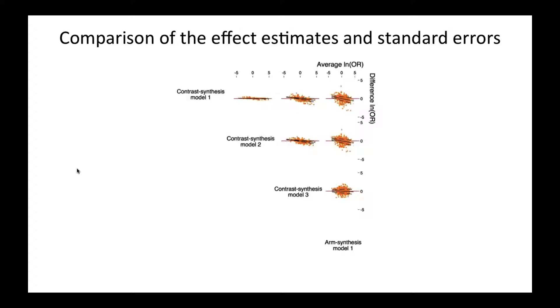Where you see good agreement, the dots, which represent about 3,500 pairwise comparisons from 120 networks, should lie close to that red zero line. The black line shows the line of agreement, and the black dashed line shows the 95% regression limits of agreement.